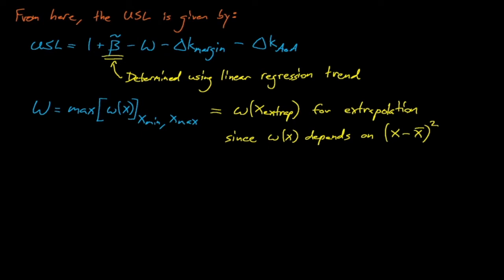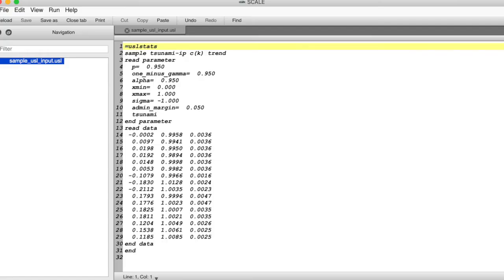So now that we know how trending analysis works, how can we use the USL stats code to produce USL estimates? Here's a sample USL stats input shown in the SCALE code's Fulcrum GUI. USL stats inputs start with a equals USL stats line, which tells the code that it's running the USL stats sequence. The second line is an arbitrary title card, which you can use for your own records to describe the system that you're analyzing.